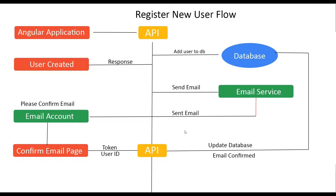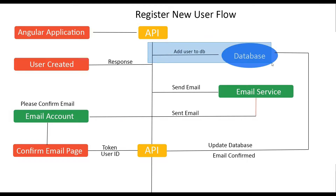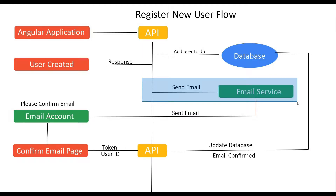Confirming emails can be pretty confusing, so I set up a diagram to give us a visual of all the steps we need to complete. A lot of steps we already completed in prior videos — from our Angular application we call the register API, send in the user's information, check that the username and email are unique, add the user to the database, and give back a response. Now we're going to add sending out an email immediately after we create the account.